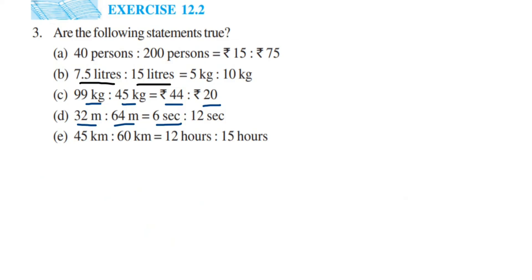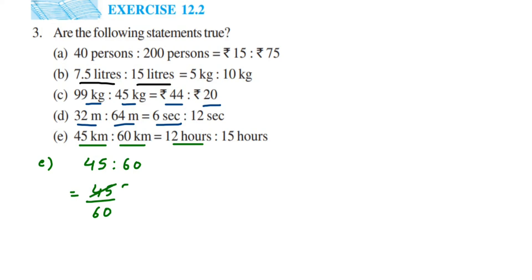Fifth question: 45 km is to 60 km is equal to 12 hours is to 15 hours. First ratio: 45 is to 60 — convert to fraction: 45 by 60. Cancelling in the 5 table: 5 nines are 45, 5 twelves are 60. Then cancel 9 and 12 in the 3 table: 3 threes are 9, 3 fours are 12 — giving 3 by 4, so the ratio is 3 is to 4.